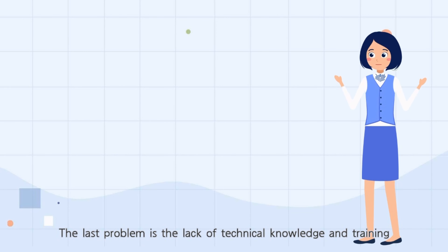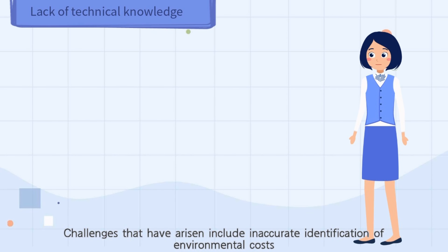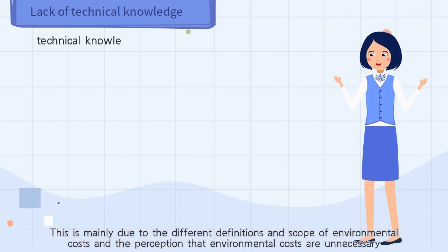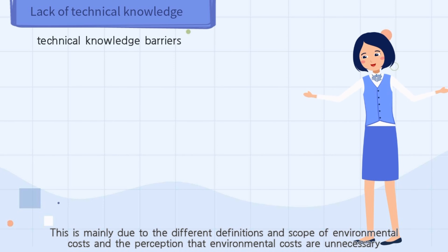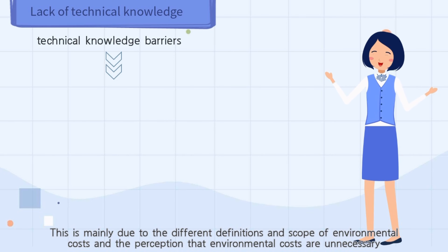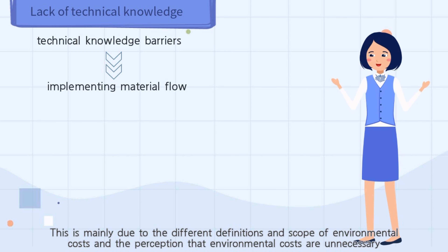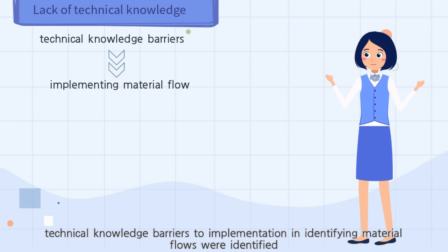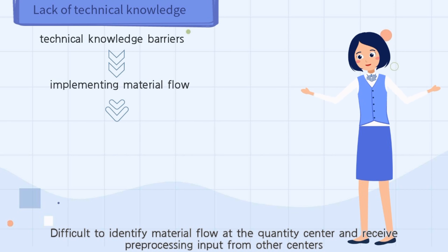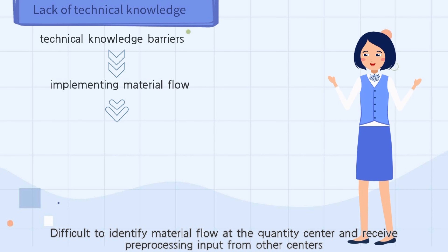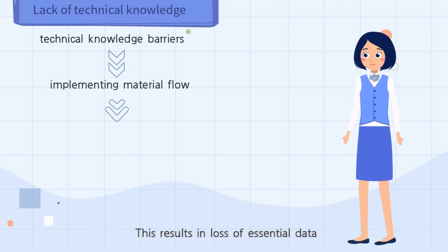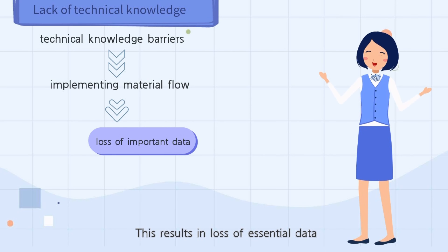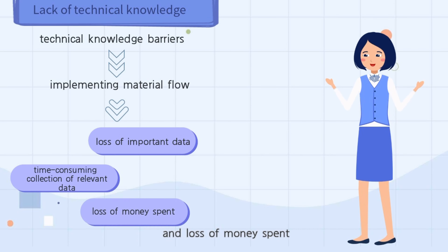The last problem is the lack of technical knowledge and training. Challenges include inaccurate identification of environmental costs, mainly due to different definitions and scope of environmental costs, and the perception that environmental costs are unnecessary. In a study dedicated to MFCA, technical knowledge barriers and difficulty identifying material flows were identified — specifically, difficulty identifying material flow at quantity centers and receiving preprocessing input from other centers, resulting in loss of essential data, time-consuming data collection, and financial loss.